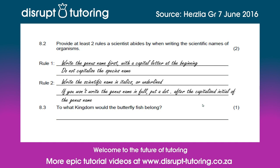The last part of question eight asks to which kingdom the butterfly fish would belong. Let's remind ourselves of the kingdoms: Kingdom Animalia where all animals fall under, Kingdom Plantae, Kingdom Protista, Kingdom Fungi, and Kingdom Monera. Fish are classed as animals and therefore belong to Kingdom Animalia.